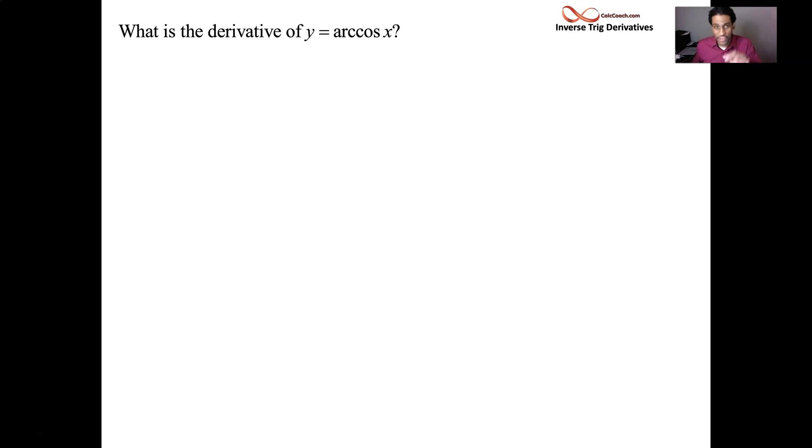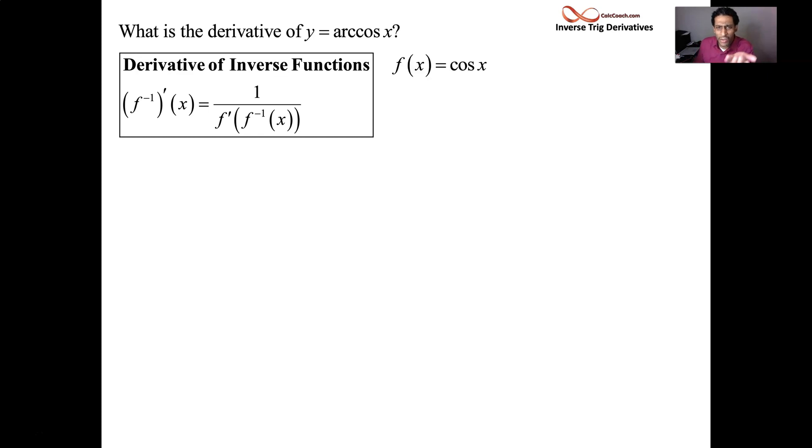Well, let's first figure out what is the derivative of arc cosine? Now we have this formula that tells us that if we know the original function and its derivative, then we can know the inverse function's derivative. So long as this exists and it's not equal to zero in the denominator there. And so our original function is cosine x and its derivative is negative sine of x.